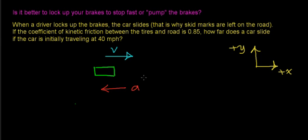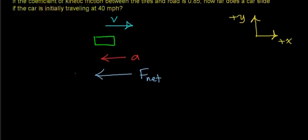In order for this object to slow down, there needs to be a net force in the direction opposite to the direction the object is traveling. Notice a fundamental concept: the net force is in the same direction as the acceleration. Now we need to draw a free body diagram representing the forces acting on this object.